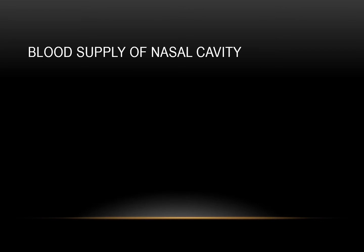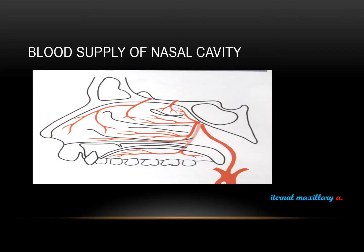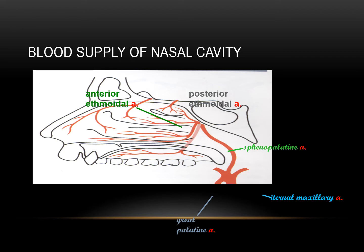The blood supply of the nasal cavity comes from the internal maxillary artery, the sphenopalatine artery, the greater palatine artery, the anterior ethmoid artery, and the posterior ethmoid artery.